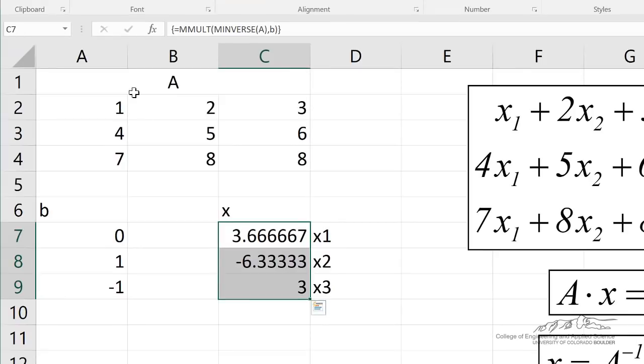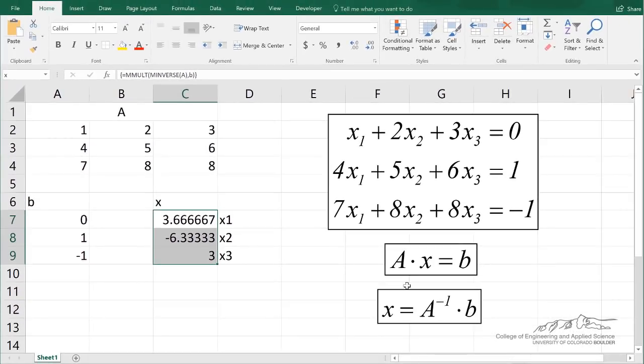I can always check this by performing this A·x equals b. So I'm going to name this vector x. Now the size of A is a 3 by 3. The size of x is a 3 by 1. So a 3 by 3 times a 3 by 1 is a 3 by 1. So I'm going to highlight a 3 by 1.